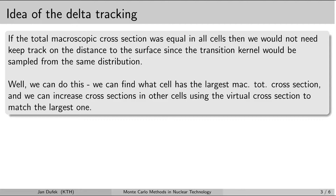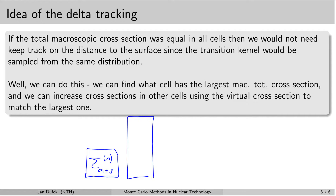Let's take an example of a system with three cells. We have three cells with three different materials, characterized by different total macroscopic cross-sections. The first cell has a cross-section for absorption and scattering of a certain size. The second cell has a very large cross-section for absorption and scattering. And the last cell has a very small cross-section.